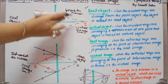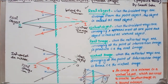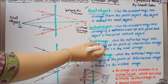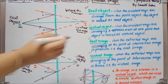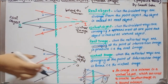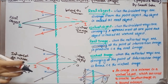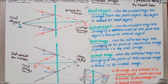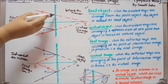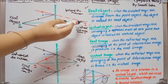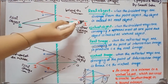Virtual image is always erect. Remember these two important points: when the reflected rays converge, at that condition we get a real image. Whereas when the two reflected rays diverge but appear to come from one point, at that condition the image is a virtual image.